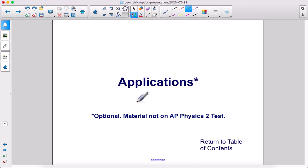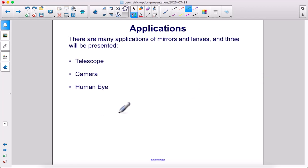Applications. This material is not on the AP Physics 2 test, it's supplemental. There are many applications of mirrors and lenses, and three will be presented: the telescope, the camera, and the human eye.